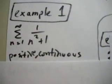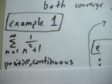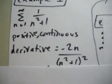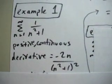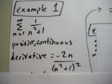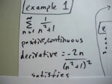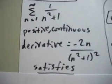Let's try it in example 1. We have the series from 1 to infinity of 1 over n squared plus 1. We already know that it's positive and continuous. The only third thing we have to make sure of is that it's decreasing, so that it satisfies the conditions of the integral test. To find if it's decreasing, you simply find the derivative, and the derivative of that would be negative 2n over (n squared plus 1) squared. So yes, it is decreasing, and it satisfies all the conditions for the integral test — we're ready to plug it into an integral.